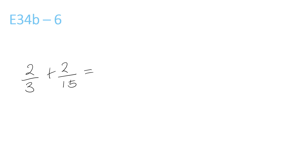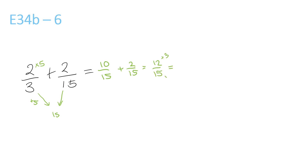Final question: the LCM, which is the lowest common multiple of these two numbers — the lowest one that they both go into — is 15. 3 times 5 is 15. We have to times the top by 5 to get 10: 2 times 5 is 10, plus the 2 over 15. This equals 10 plus 2 is 12 over 15, and the top and bottom numbers can both be divided by 3. 12 divided by 3 is 4, and 15 divided by 3 is 5.